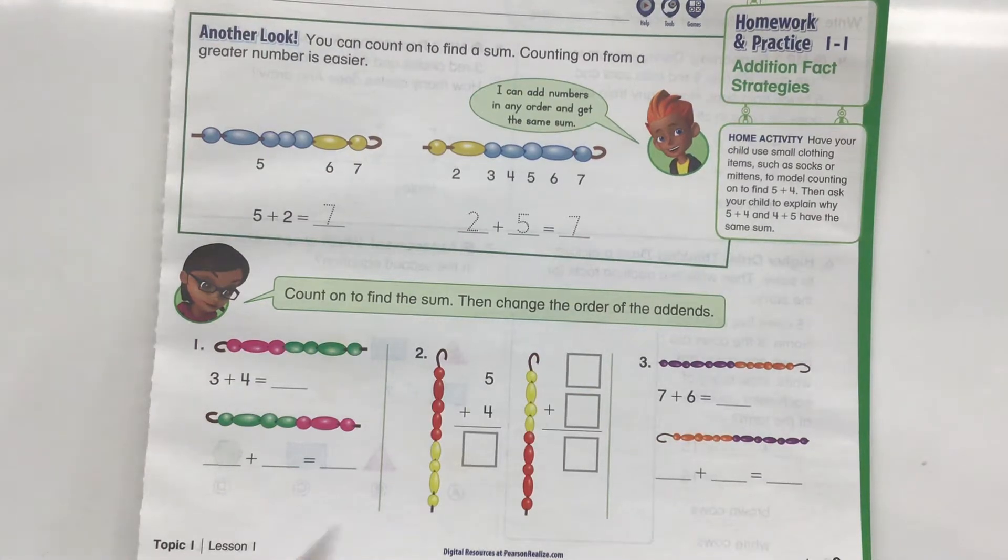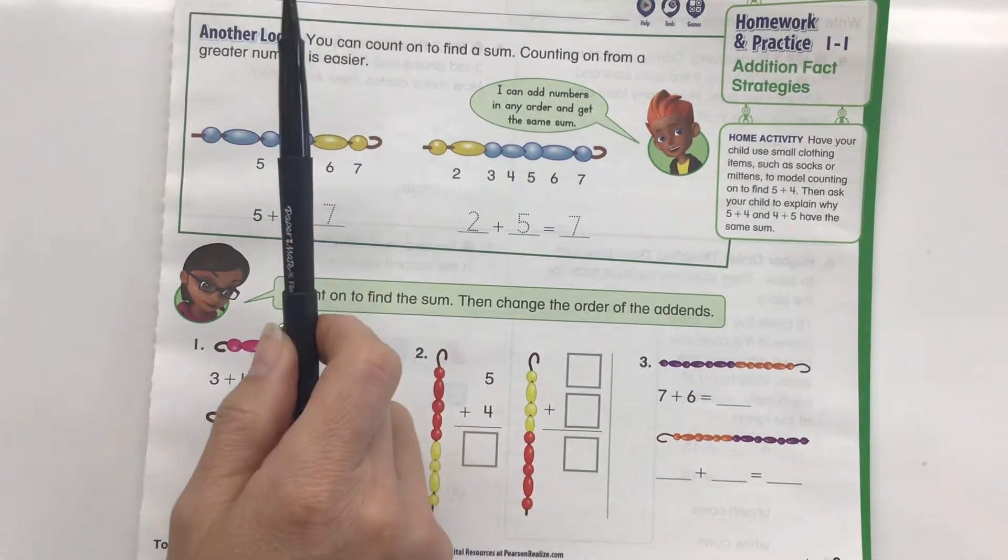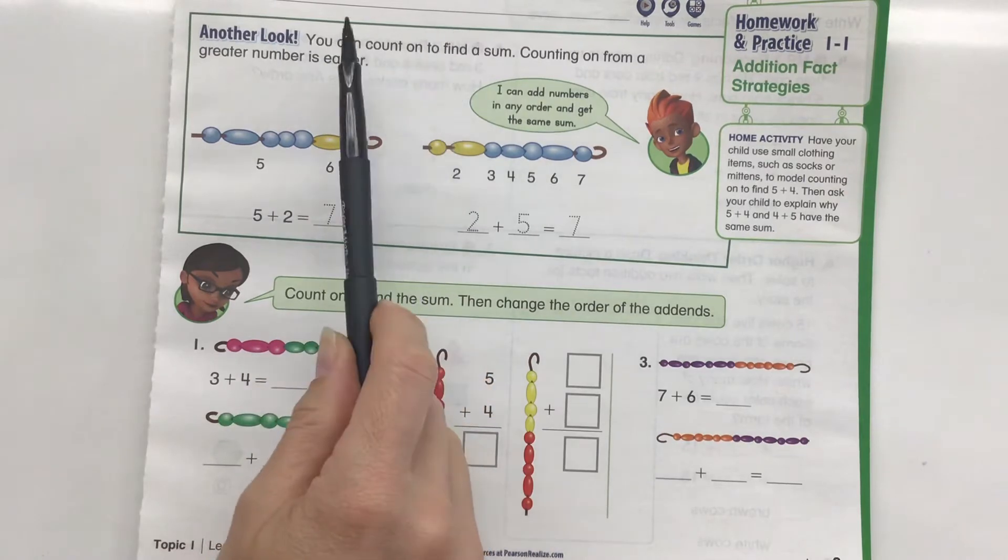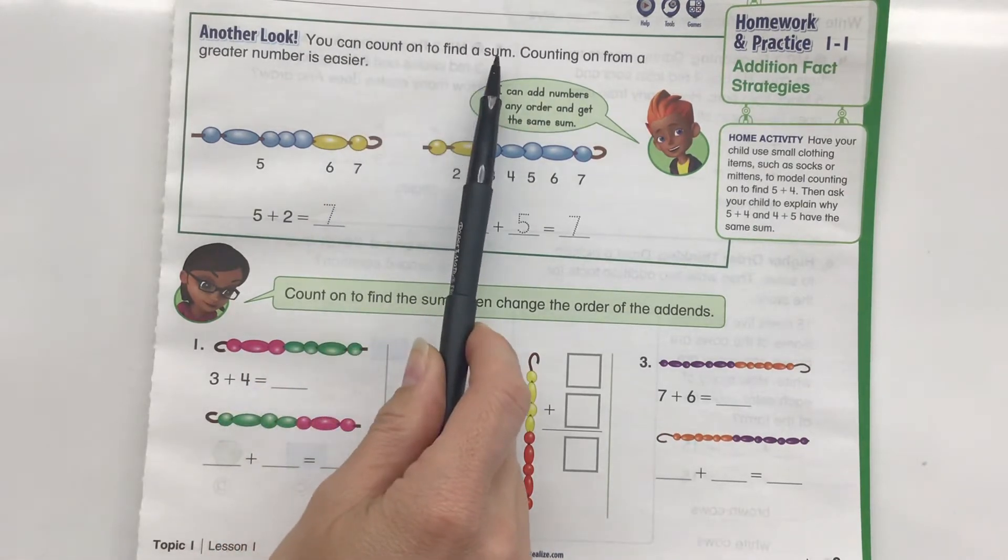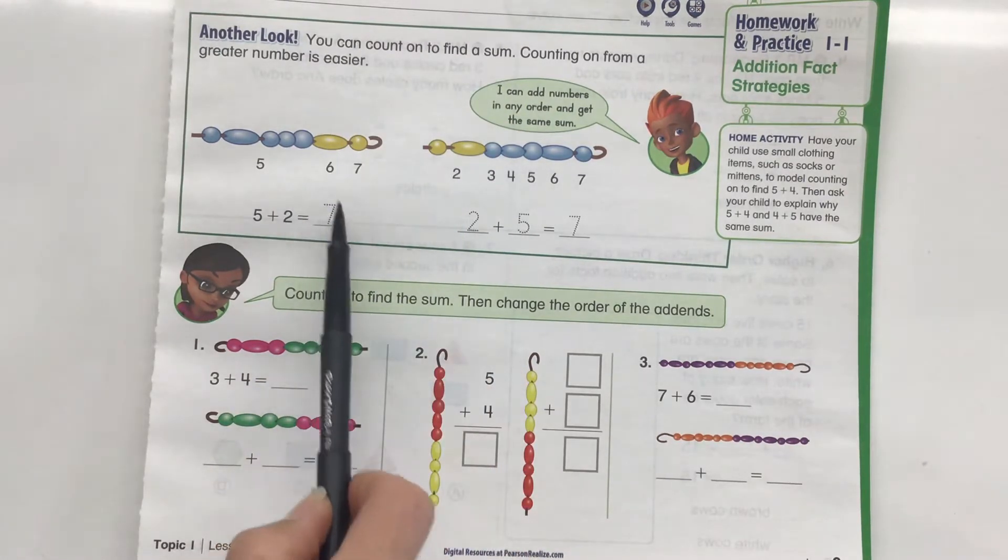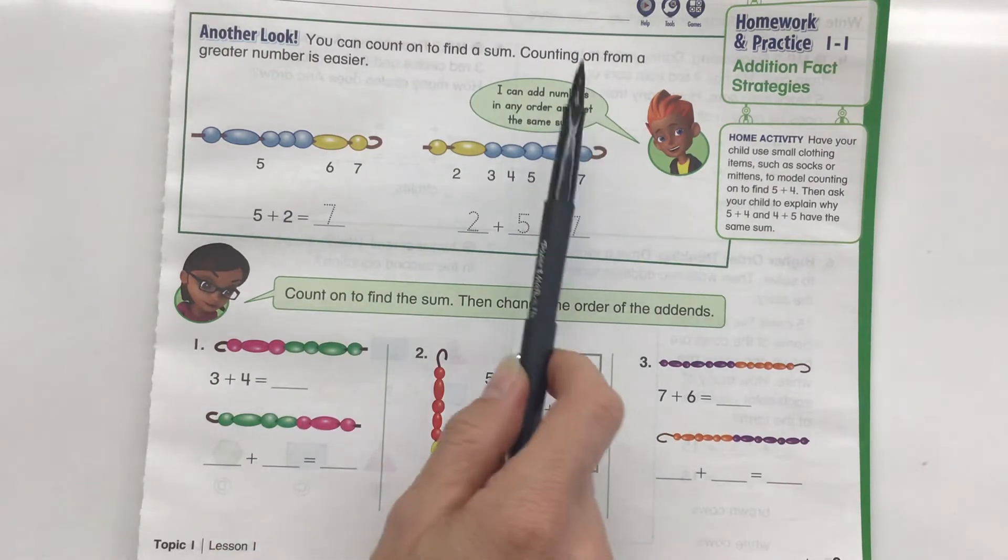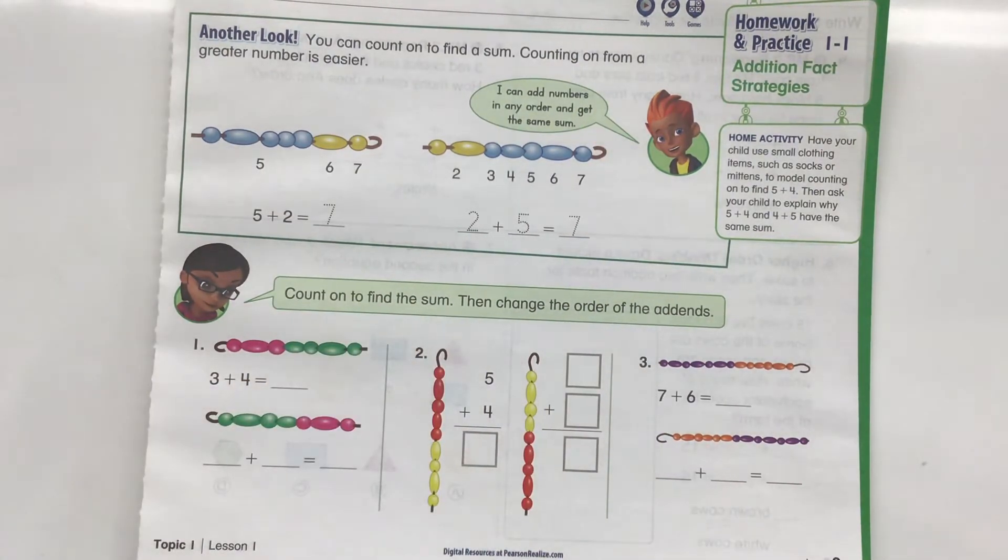Alright, this is our homework practice 1-1. We're just following up from our classroom lesson. You can count on to find a sum. Again, a sum is our total number when we add together. Counting on from a greater number is easier.